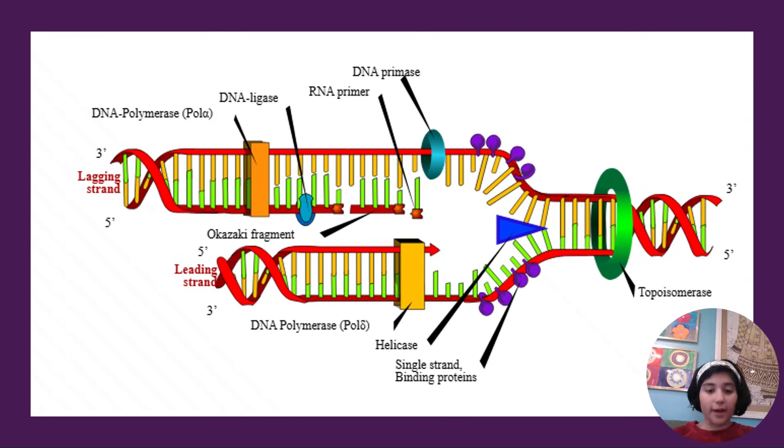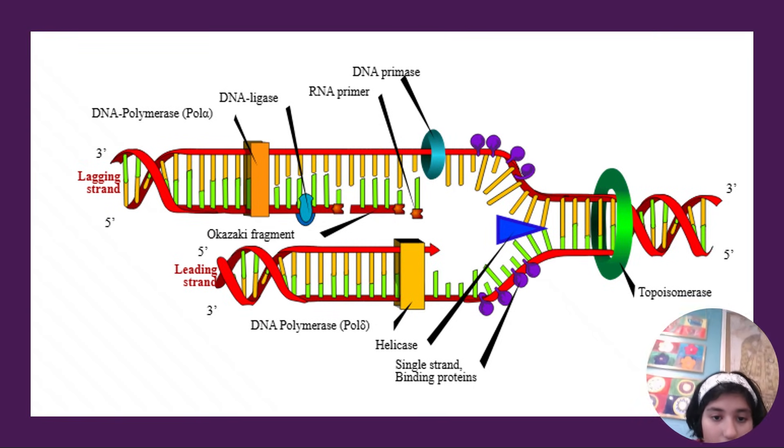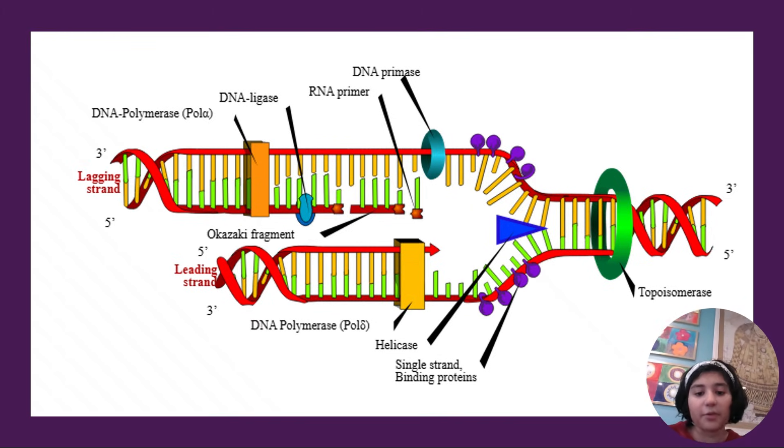Then the next is the DNA polymerase, also known as Pol. So the DNA polymerase only works on the 3 prime to 5 prime end. It's basically like a proofreader for the DNA molecule and making new strands.